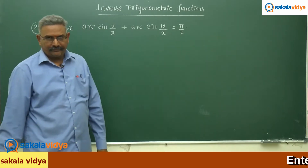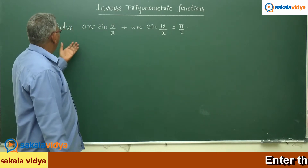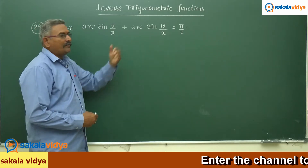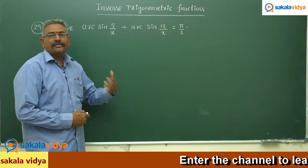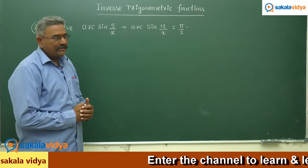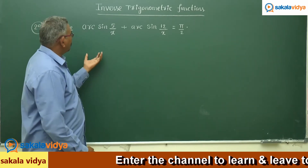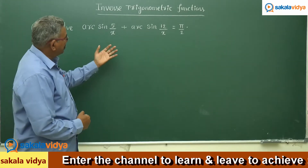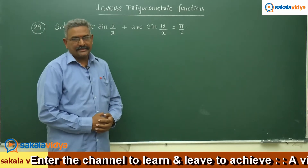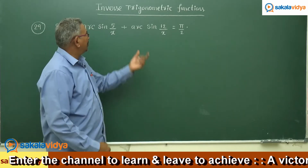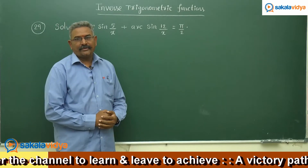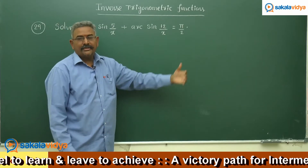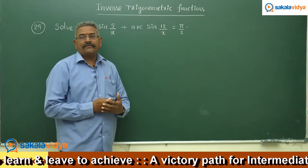One more problem: solve arcsin(5/x) plus arcsin(12/x) equals π/2. Here we need not get any confusion — arcsin(5/x) is nothing but sine inverse of 5/x, and similarly arcsin(12/x) is sine inverse of 12/x. So sine inverse(5/x) plus sine inverse(12/x) equals π/2, and we need to find the value of x.